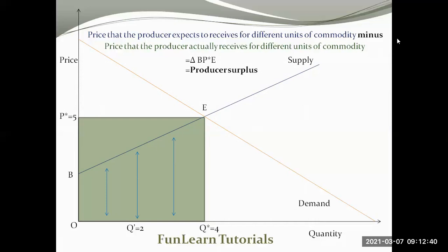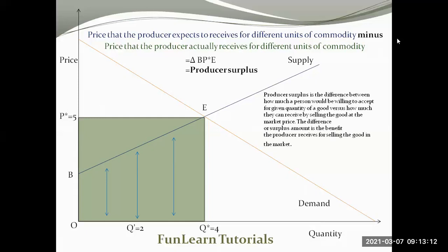This triangle is the producer surplus because producers were expecting less from consumers — perhaps $2 or $3 — but because the market outcome is determined at point E where the market price is OP star, they are actually getting more than they expected, collecting a surplus. The definition of producer surplus is: the difference between how much a person would be willing to accept for a given quantity of a good versus how much they can actually receive by selling at the market price. It measures the difference between the expectation and the actuality.